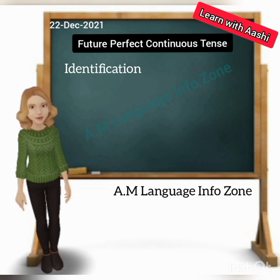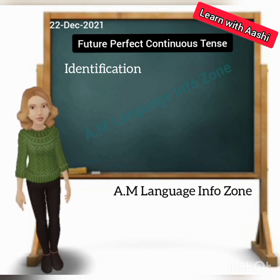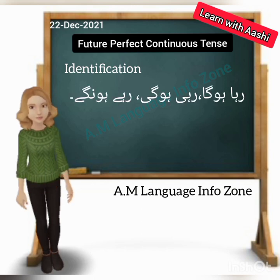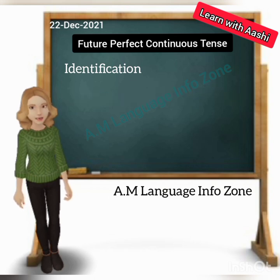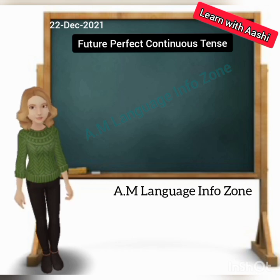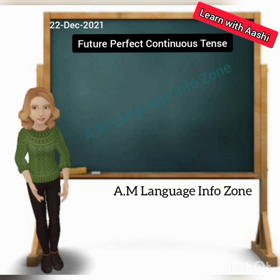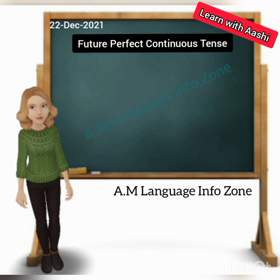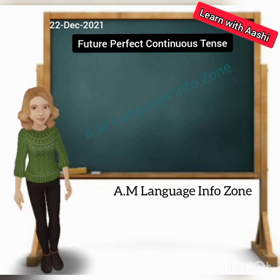Future Perfect Continuous Tense — identification, or pehchaan in Urdu and Hindi. These sentences end with specific words. What is the difference between Future Continuous Tense and Future Perfect Continuous Tense, as they both end with the same words? The difference is that Future Perfect Continuous Tense sentences have a specific time frame in them.